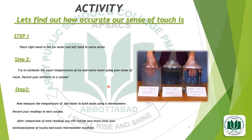In step two, try to estimate the exact temperatures of the ice cold and warm water using your sense of touch and record your estimate. In step three, measure the temperature of the water in both jars using a thermometer and record your readings. After comparison of both readings, you will realize how close your estimates from sense of touch are to the exact thermometer readings.